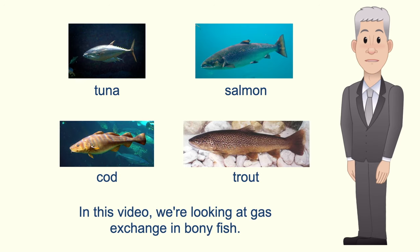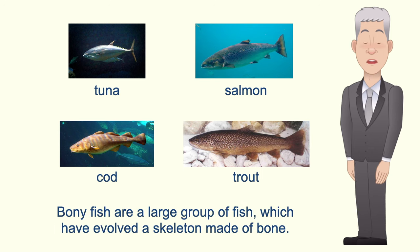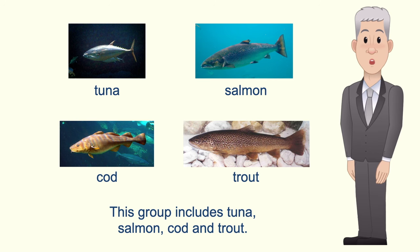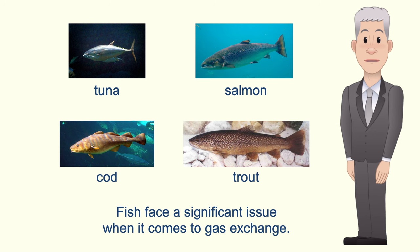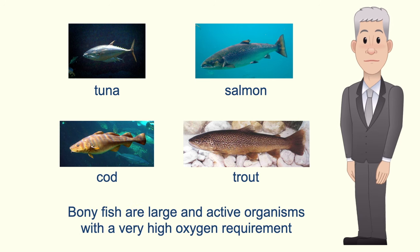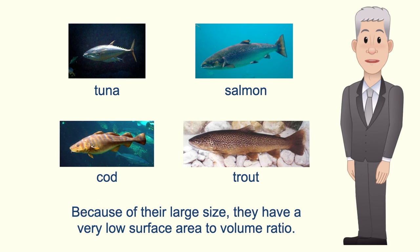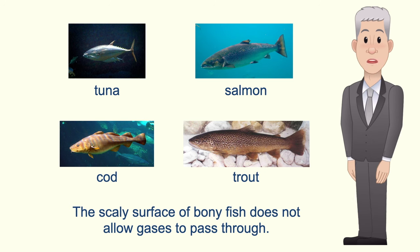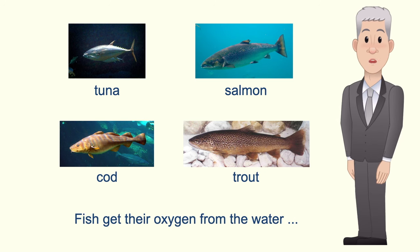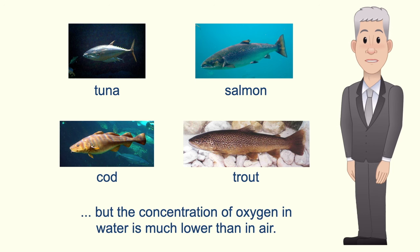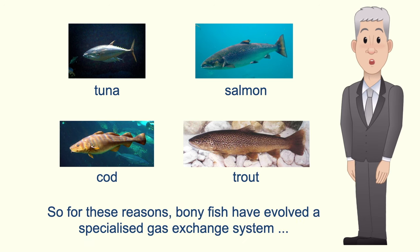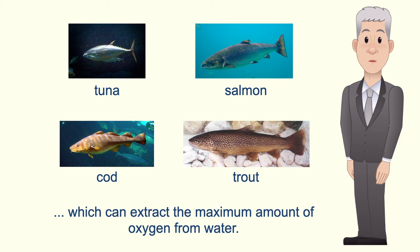In this video we're looking at gas exchange in bony fish. Bony fish are a large group of fish which have evolved a skeleton made of bone. This group includes tuna, salmon, cod and trout. Now fish face a significant issue when it comes to gas exchange. Bony fish are large and active organisms with a very high oxygen requirement, and because of their large size they've got a very low surface area to volume ratio. The scaly surface of bony fish does not allow gases to pass through. Fish get their oxygen from the water, but the concentration of oxygen in water is much lower than in air. So for these reasons bony fish have evolved a specialised gas exchange system which can extract the maximum amount of oxygen from water.